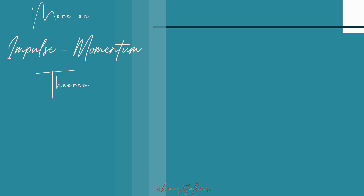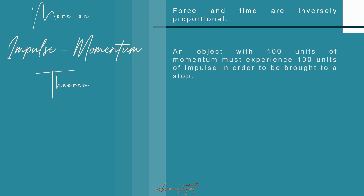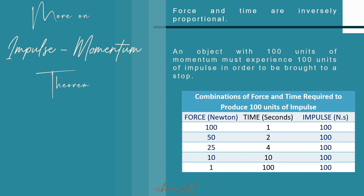Let's examine some physics in action in the real world, focusing on the effect of collision time upon the amount of force an object experiences. Force and time are inversely proportional. An object with 100 units of momentum must experience 100 units of impulse to be brought to a stop. As you can observe in the table, any combination of force and time can produce the 100 units of impulse needed. The greater the time over which the collision occurs, the smaller the force acting upon the object.